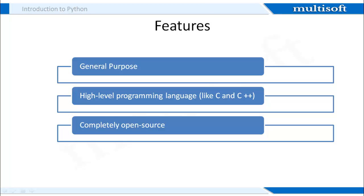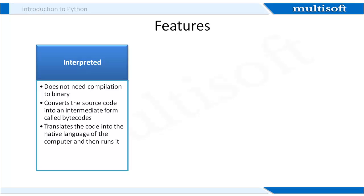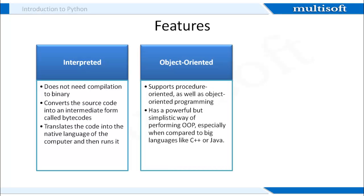Python is a general purpose programming language that is used to develop a variety of applications. It is a high-level language like C and C++. Python is completely open source, which means that it is available for free use to anyone. Python is an interpreted language that doesn't need compilation — it converts the source code into an intermediate form called bytecodes and translates the code to the computer's native language. Python is also object-oriented and has a simplistic yet powerful way of performing object-oriented programming.